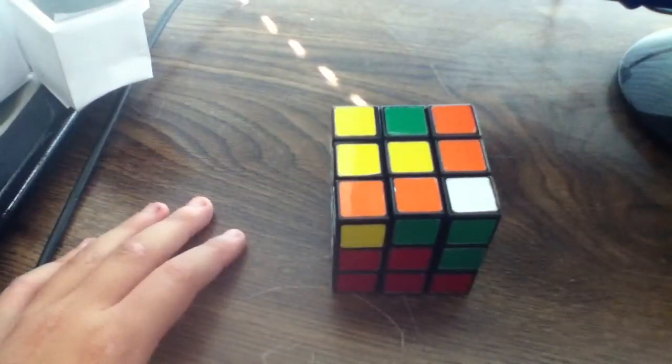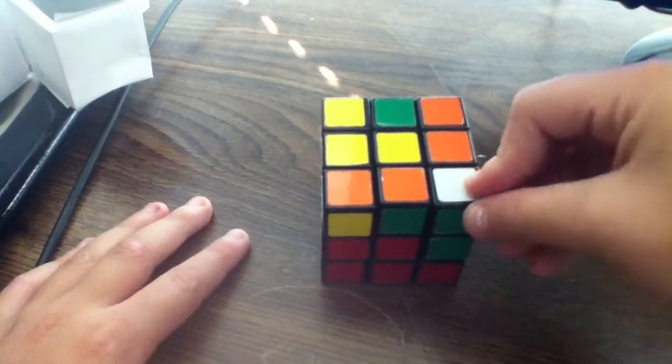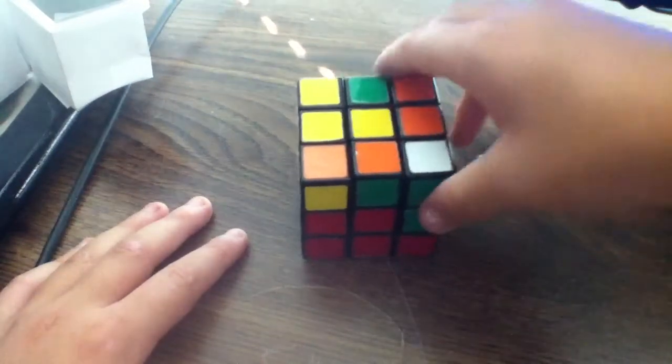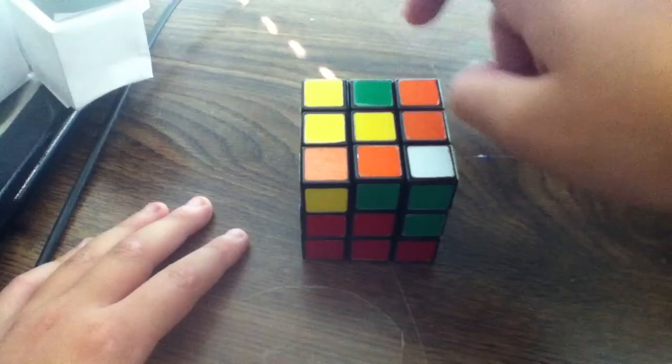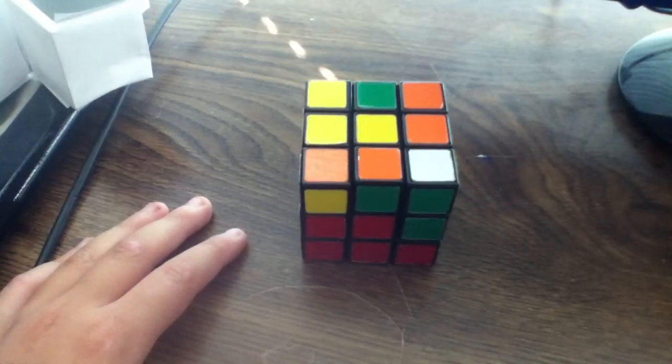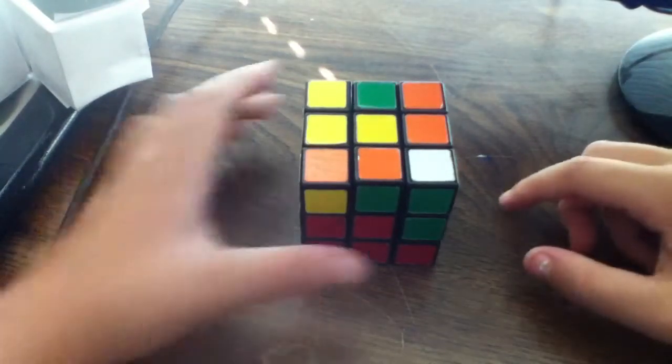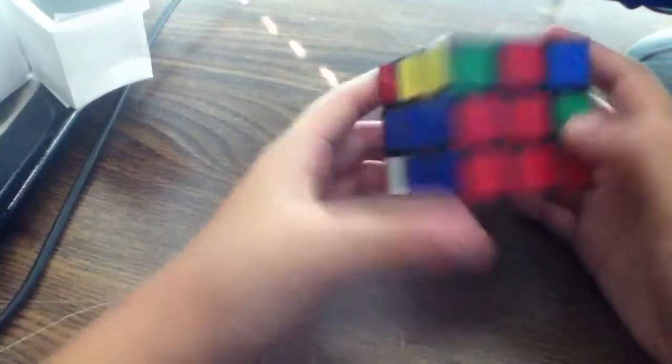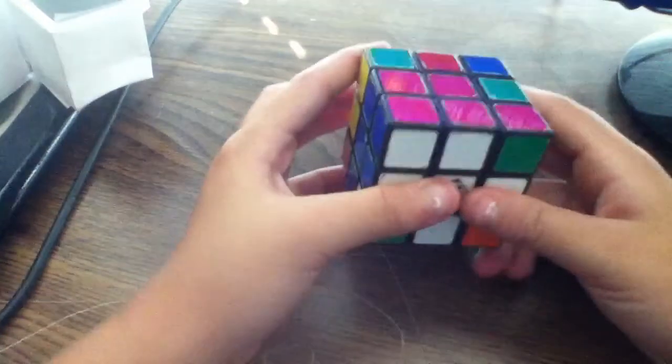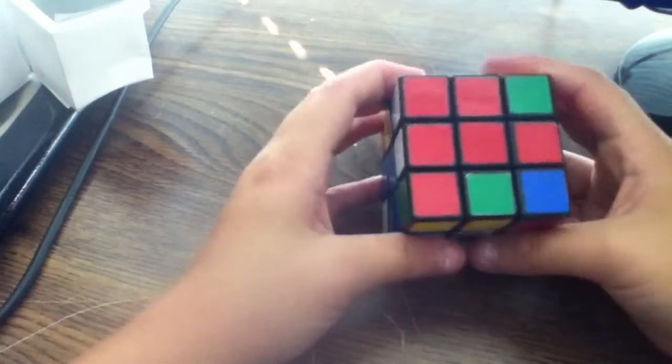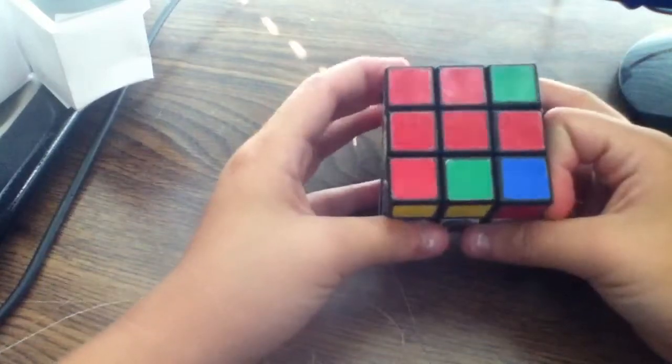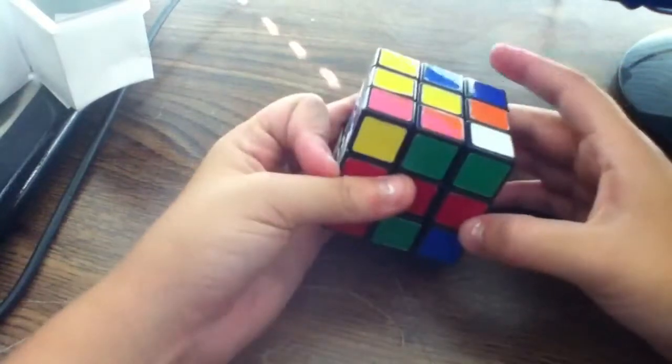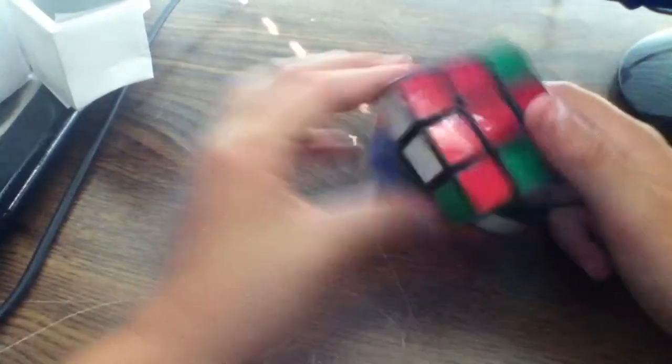So now, since if you were to turn this that way, red would be here and green would be right there. When you'd line it up, that would be green and that would be red, and you don't want that. So what you want to do is bring this over. You don't want to bring it over here. Actually, you could. But if you were to, you would not want to move it that way because if you were to bring that over, you would have just messed up this.